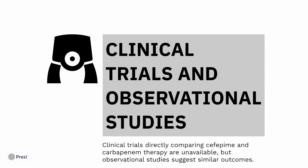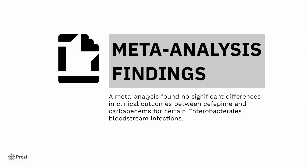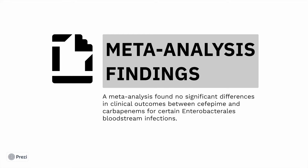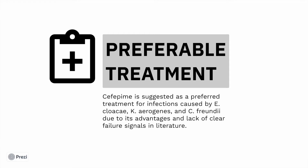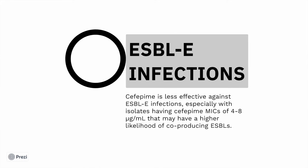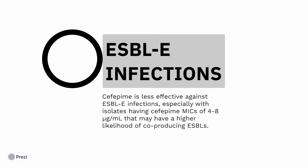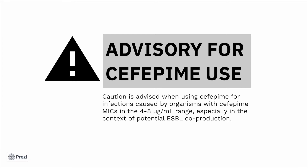Clinical trials directly comparing cefepime with carbapenems are unavailable, but observational studies show similar outcomes. A meta-analysis found no significant difference in clinical outcomes between cefepime and carbapenems in Enterobacter infections. Cefepime is suggested as the preferred treatment because of its advantages and lack of clear failure in the literature. For ESBL-producing organisms, cefepime should be avoided as it has more chances of failure. Caution is advised when using cefepime for organisms with a cefepime MIC of 4 to 8, especially in the context of potential ESBL co-production.